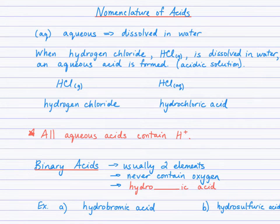Okay, nomenclature of acids. We're going to be naming and writing the formulas of aqueous acids, and so that state, AQ in brackets, that symbol, is going to be written after the formulas of these acids. AQ stands for aqueous, which means dissolved in water.